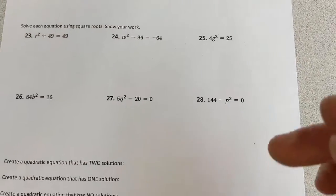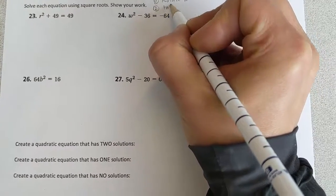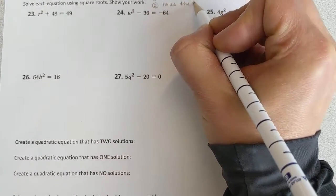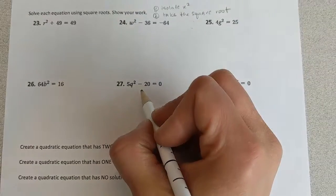These ones are solving by square roots. Again, you're going to isolate x squared and then take the square root. Now of course if it's w, then we would be isolating w squared.